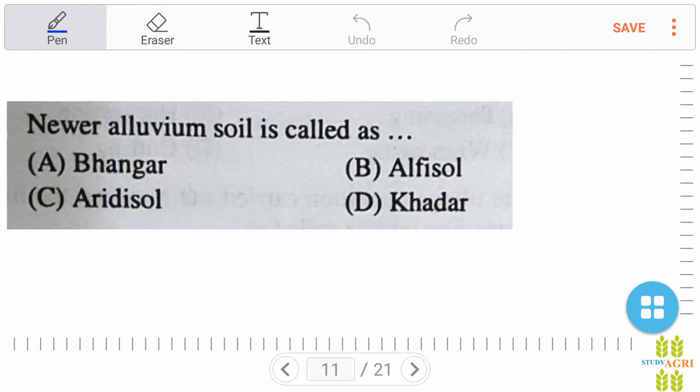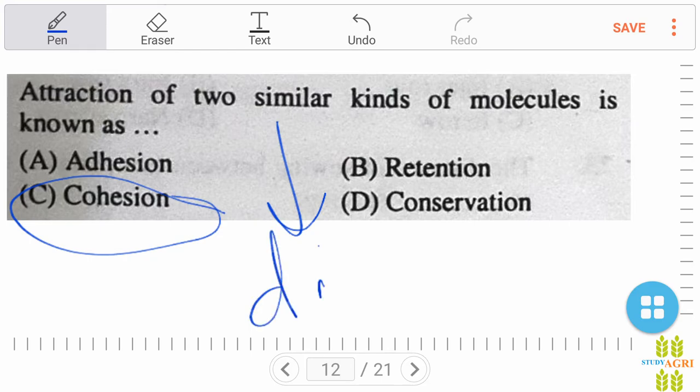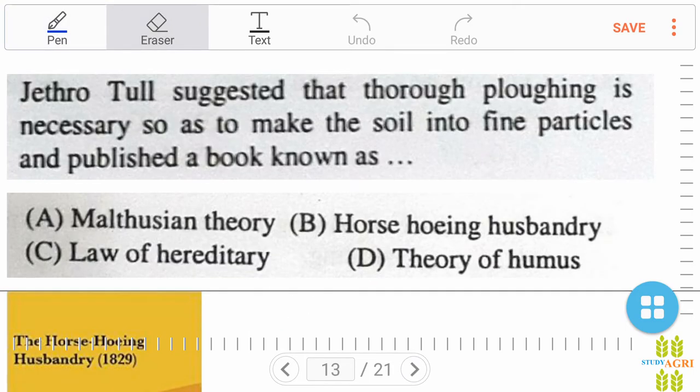Next question: newer alluvium soil is called option D, khadar. That is the right answer. Next question: attraction of two similar kinds of molecules is known as cohesion. Right answer is cohesion. If it is given dissimilar matter, then the right answer is adhesion, but in our case the right answer is cohesion.